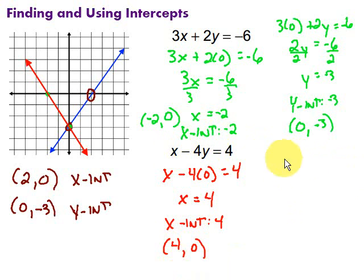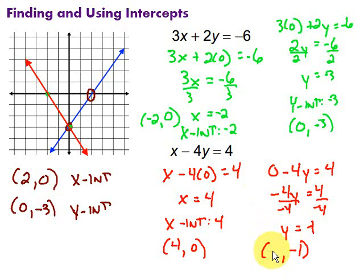Then I could find the y-intercept by putting in 0 for x, so 0 minus 4 times y equals 4. Then that 0 just goes away there, I have negative 4y equals 4. Then divide by negative 4, both sides, and we get y equals negative 1. So my ordered pair would be that y is negative 1. And what did I put in to get that? I put in 0. Or I could write it like this, the y-intercept is negative 1.